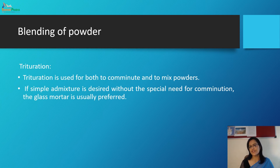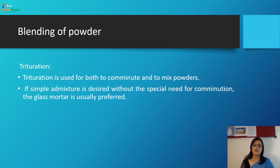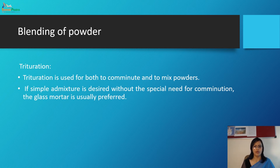Next is trituration, used for both comminuting and mixing the powder — that is, reducing particle size and mixing. If a mixture is desired without a special need for reducing particle size, a glass mortar is usually preferred.